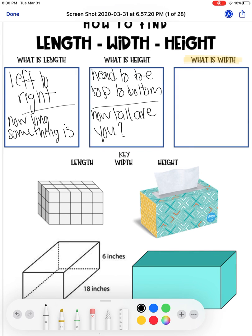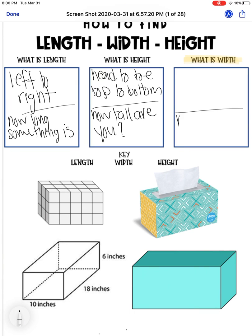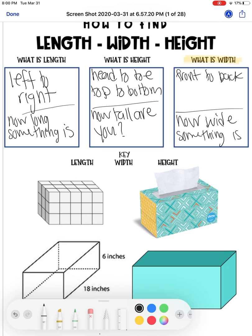So width is how wide something is. So the best thing I can tell you is from front to back. So one thing to remember is that it's front to back. So let's go ahead and start dissecting these models down here, finding length, width, and height.